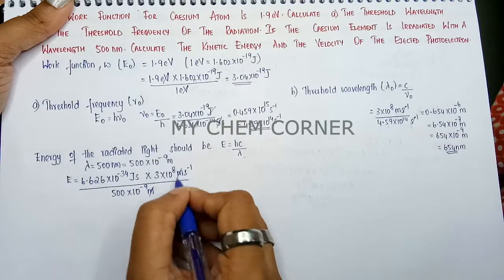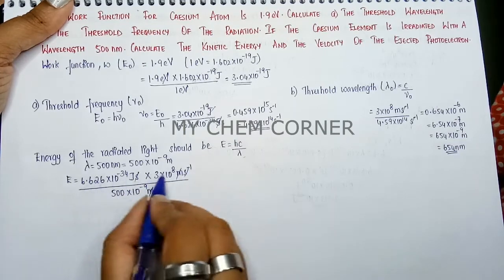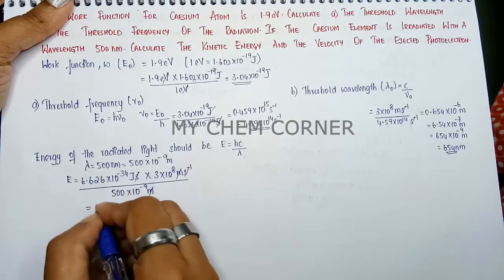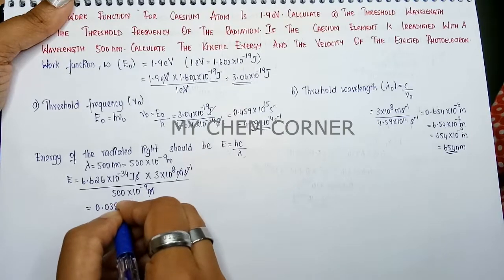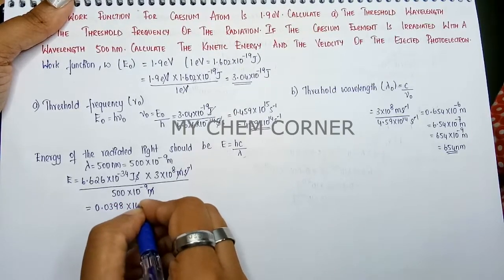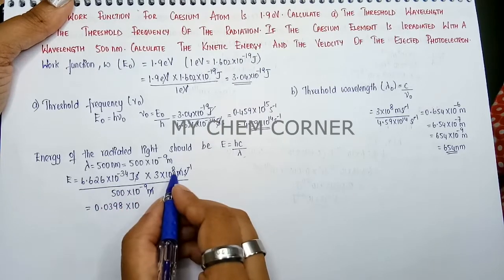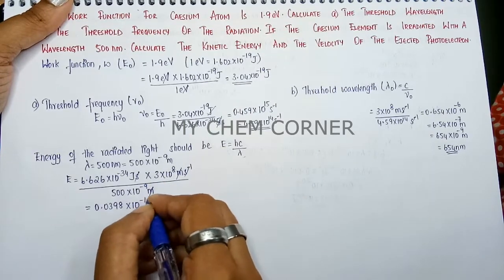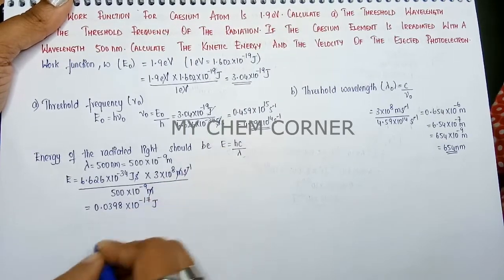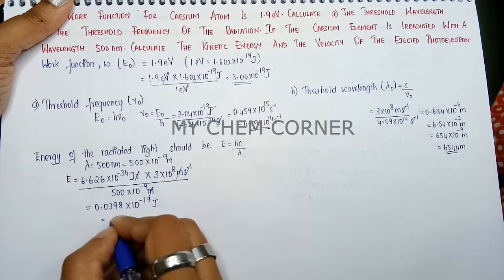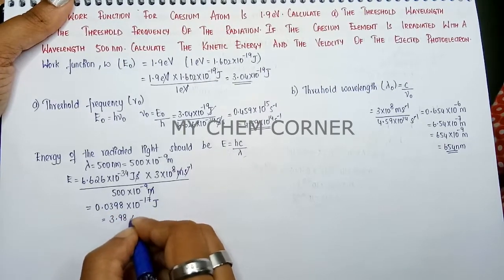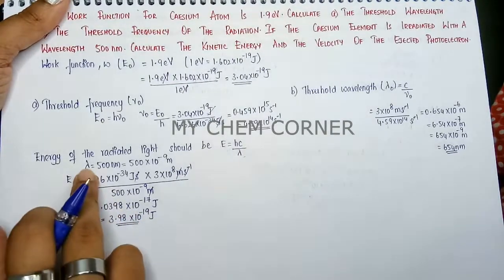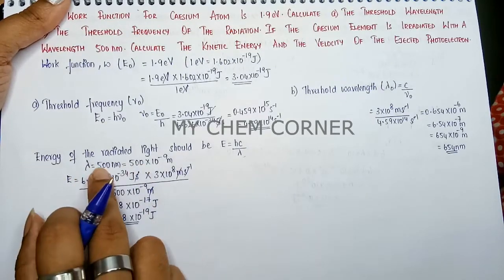Substituting: E = (6.626 × 10⁻³⁴ J·s × 3 × 10⁸ m/s) divided by (500 × 10⁻⁹ m). Cancelling SI units, 6.626 × 3 / 500 gives 0.0398, and the power is 10⁻³⁴⁺⁸⁻⁽⁻⁹⁾ = 10⁻¹⁷ J. Shifting the decimal by 2 places gives E = 3.98 × 10⁻¹⁹ joules — the energy for radiation at 500 nm.